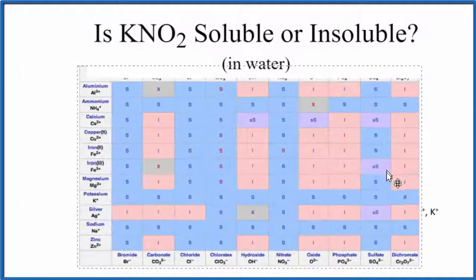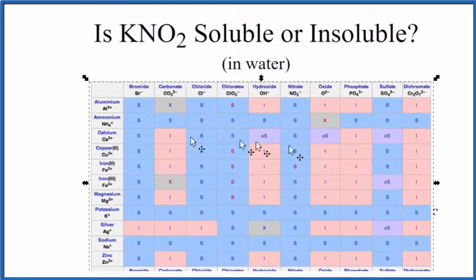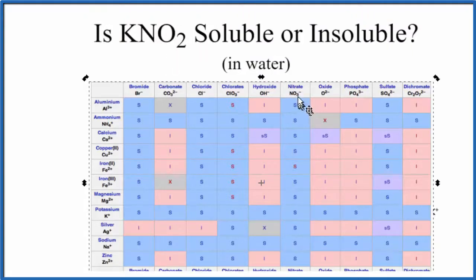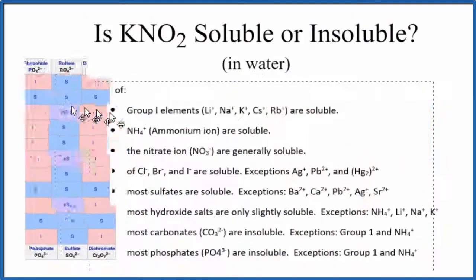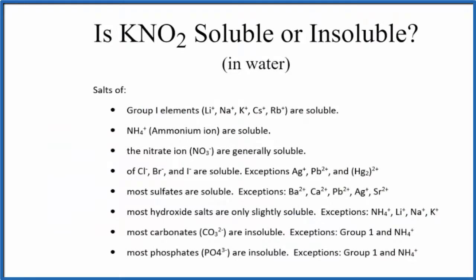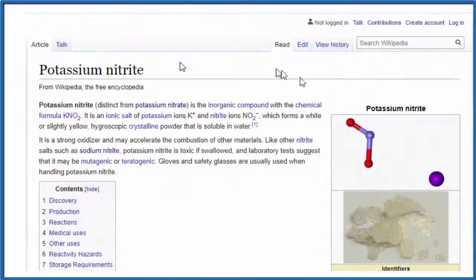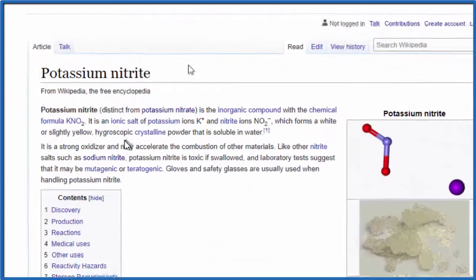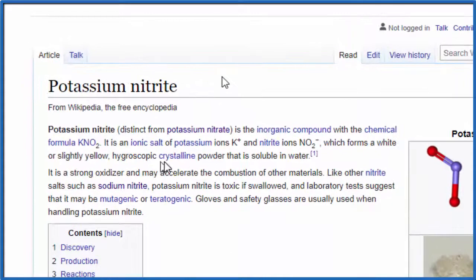We could also look at a solubility chart to try to figure that out. When we look at the chart, we don't see nitrite — we have NO₃⁻, that's the nitrate, but NO₂⁻, the nitrite ion, is not on our chart. So that's not so helpful in this case.